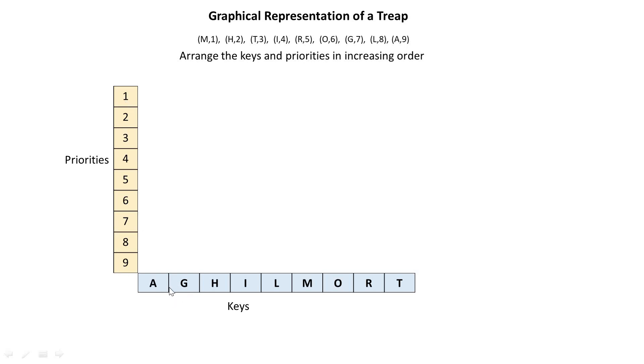And we have the keys A, G, H, I, L, M, O, R, T. So what we do is to take M1 and plot it. M against what? Against 1. So this is what we have. 1 against M. We've plotted it as a first point on the treap graph.